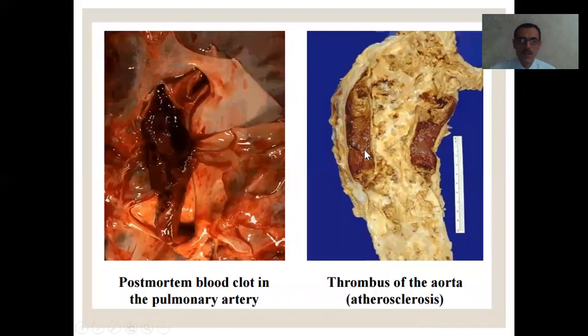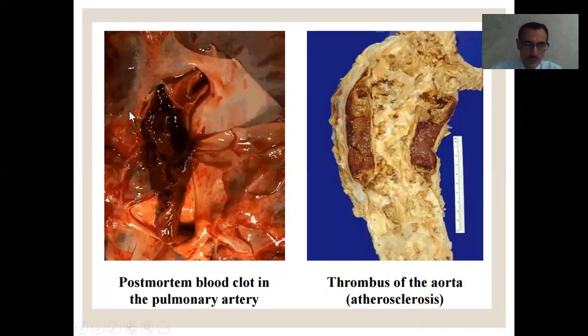A thrombus is attached to the vessel wall — for example, a thrombus of the aorta in arteriosclerosis. The consistency is firm, whereas the postmortem clot is very loose.